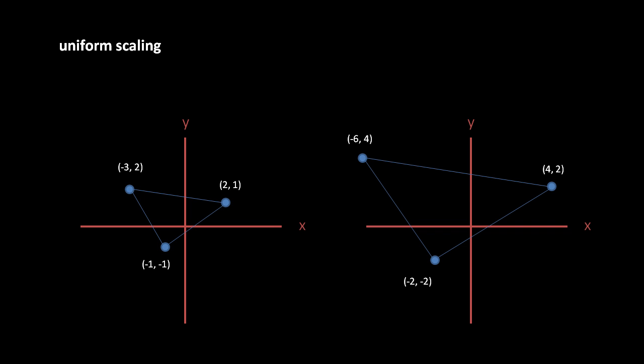Coordinate negative 3, 2 becomes negative 6, 4, coordinate 2, 1 becomes 4, 2, and coordinate negative 1, negative 1 becomes negative 2, negative 2.